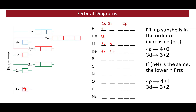Boron has 5 electrons: 2 in 1s, 2 in 2s, and 1 in 2p. We put electrons in 2s before 2p because the n+L sum for 2s is 2, while the sum for 2p is 3 — so we fill the orbital with the lower sum first. Moving to carbon with 6 electrons: 2 in 1s, 2 in 2s, 1 in 2p — and then for the sixth electron we have the choice of pairing it in the same p orbital or placing it in a separate p orbital.